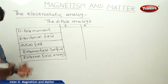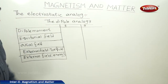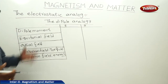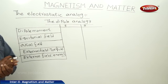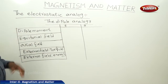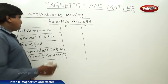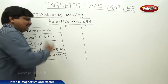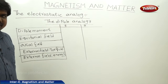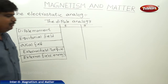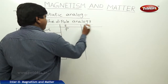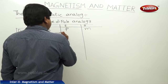Now we will see the comparison between the physical quantities, how they are represented in different fields. The first one is the dipole moment. In the electric field, the dipole moment is represented with P, and in the magnetic field with M.